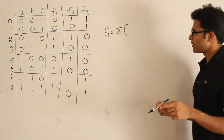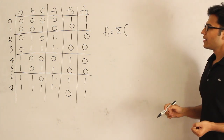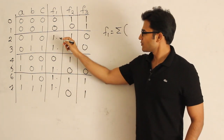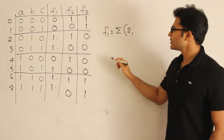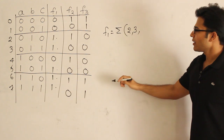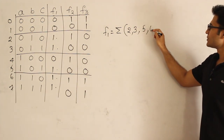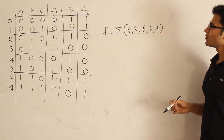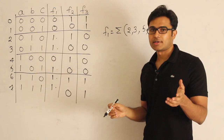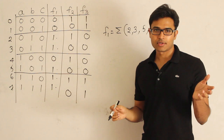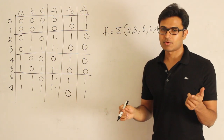What are all the values for which f1 is 1? They are 2, 3, 5, 6, and 7. So this is how you write it in canonical sum of products form. The other way to write it is product of sums form.